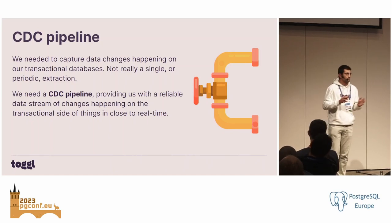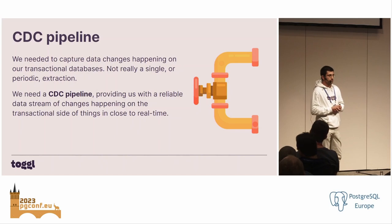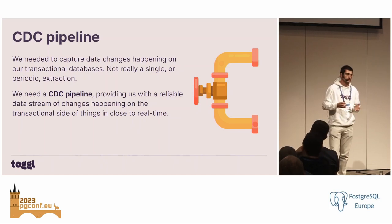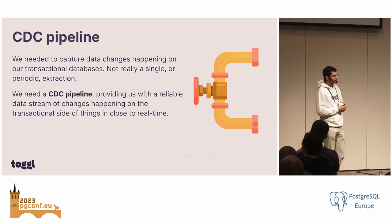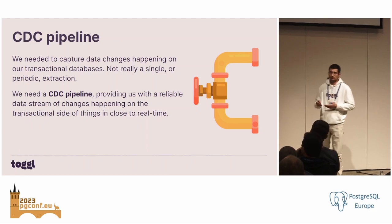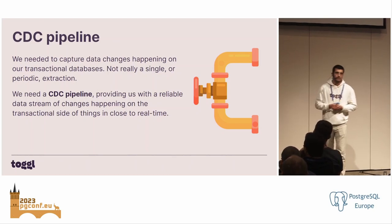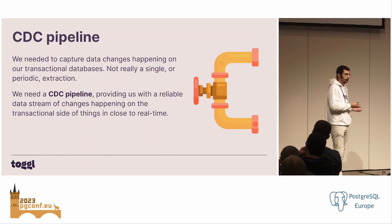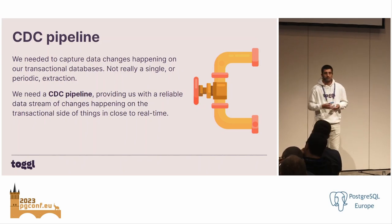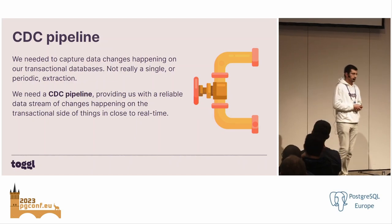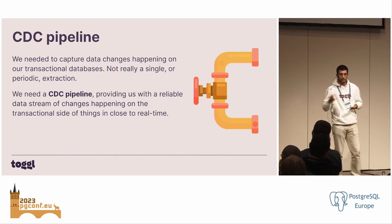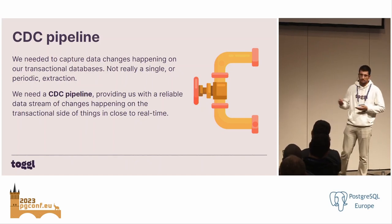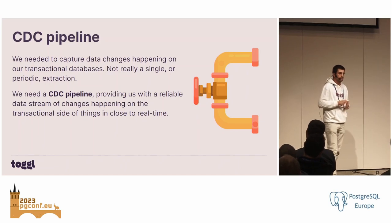All of this because we had one very important requirement in mind, which was to keep our reporting capabilities as close to real-time as possible. That means that periodical data extraction would not do the job, while the CDC pipeline would put in place a reliable data stream of changes happening on our transactional database that we could then use to keep our datasets up-to-date, along with other use cases — all happening in a close-to-real-time fashion.